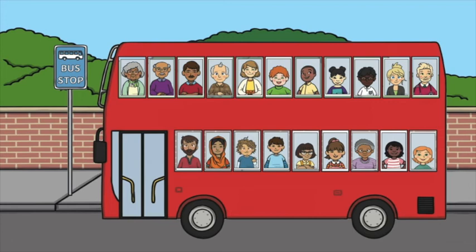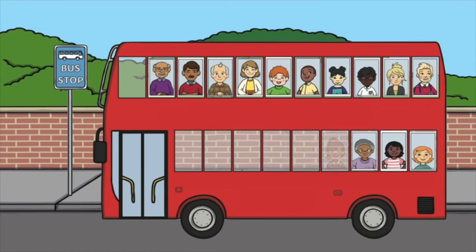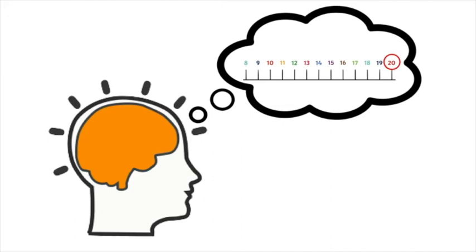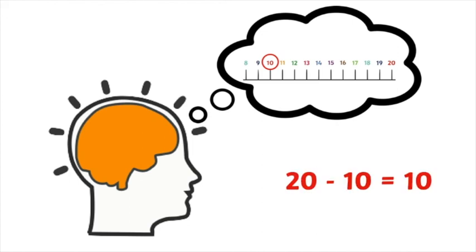First there were twenty passengers on the bus. Then ten passengers hopped off. Now how many passengers are there? Twenty take away ten equals ten — now there are ten passengers left. Imagine a number line starting at twenty and count back ten: one, two, three, four, five, six, seven, eight, nine, ten. The answer is ten. Twenty take away ten equals ten.